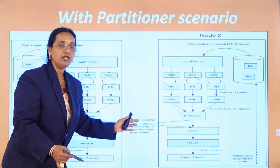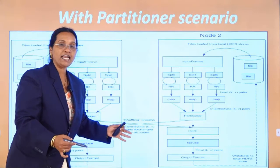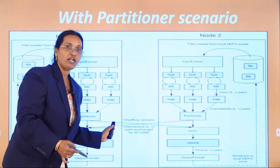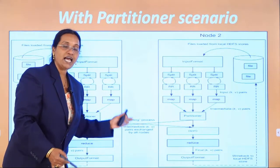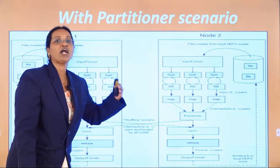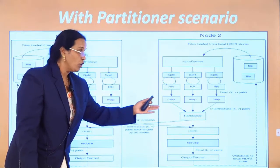For example, all salaries less than 1000 should go to partition 1, and all salaries greater than 2000 should go to another partition. The shuffling process handles this grouping.